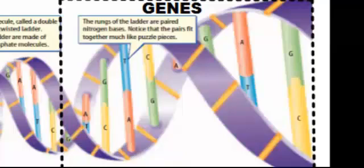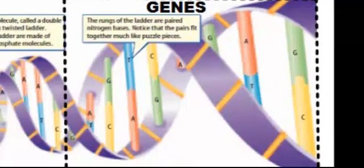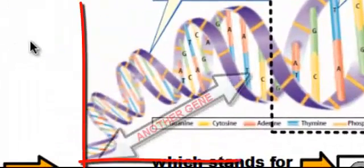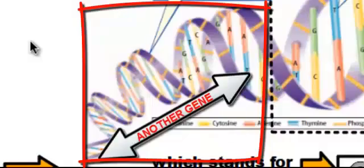These genes are the recipes inside of the cookbook. So this particular section of DNA would be the gene for one protein, and then another section of DNA would be the recipe for other proteins that the body needs to make.